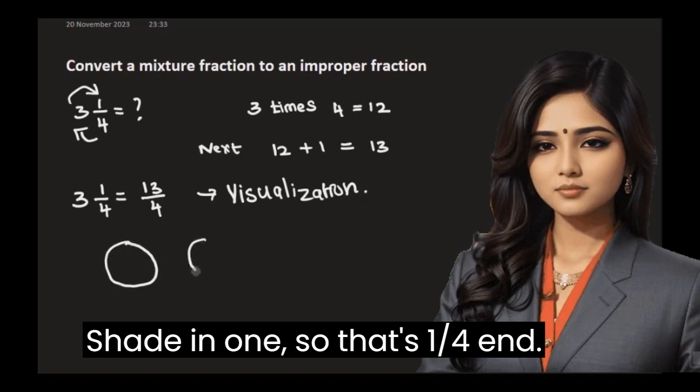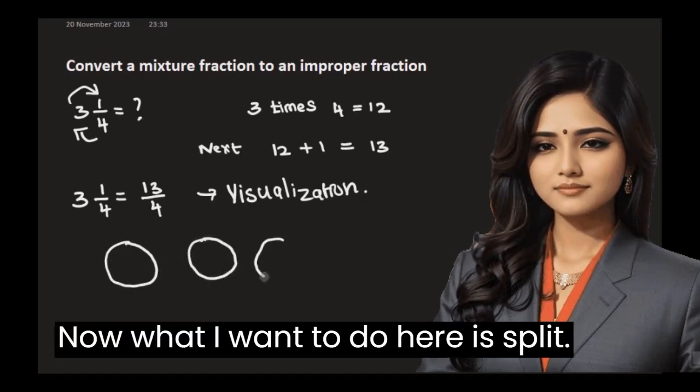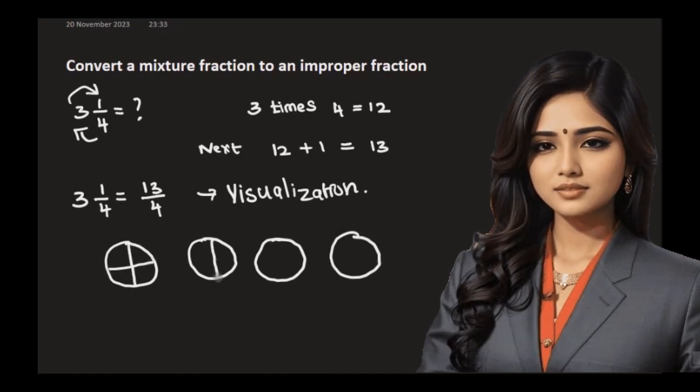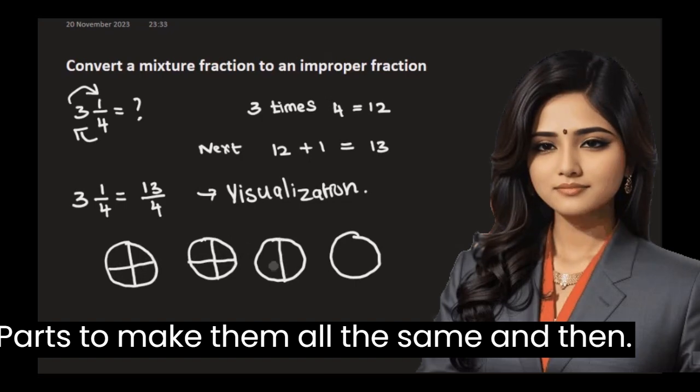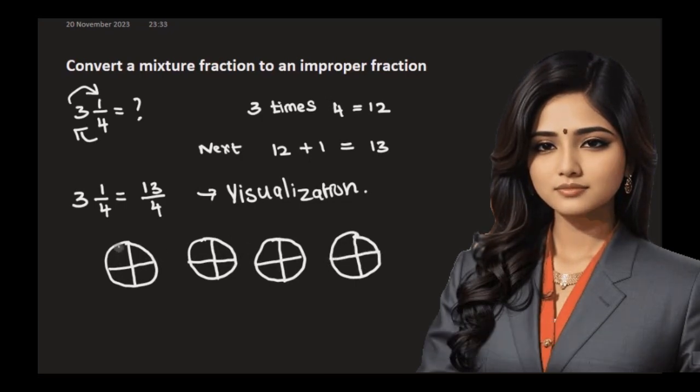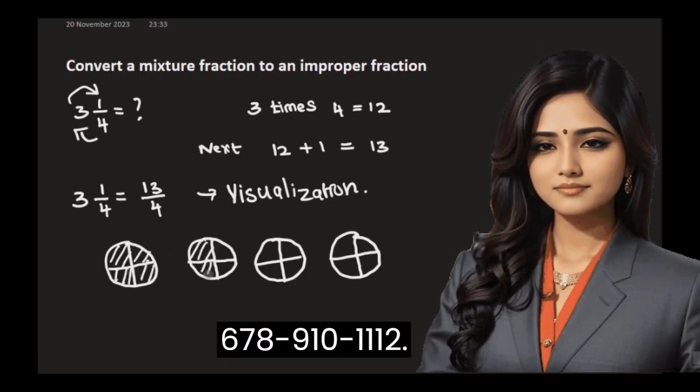So that's 1/4th. And now what I want to do here is split the rest of the wholes into 4 equal parts to make them all the same. And then you just simply count the total number of parts shaded: 1, 2, 3, 4, 5, 6, 7, 8, 9, 10, 11, 12,